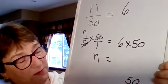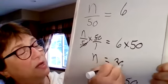Let's go like this. 6 times 0 is 0. 6 times 5 is 30. 300.